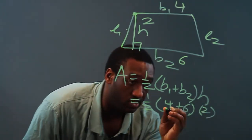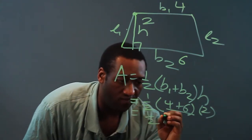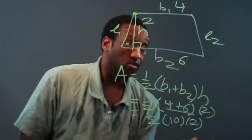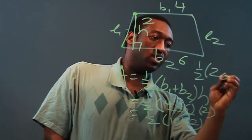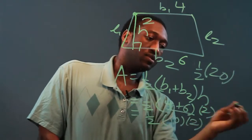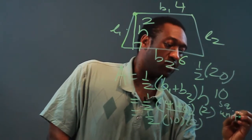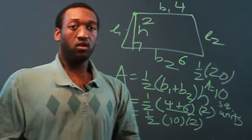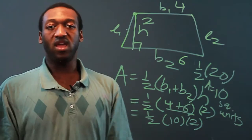Order of operations — let's do parentheses first. One-half of ten times two. Ten times two would be twenty, and then multiply by a half is the same as divided by two, so we'll get ten square units as the area. So that's how you find the area of a trapezoid and a triangle.